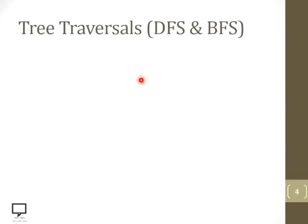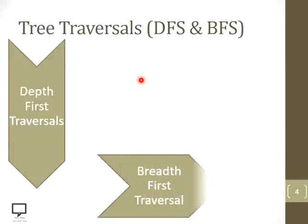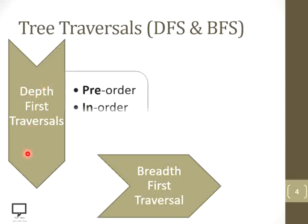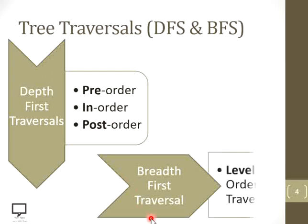Let's see what the different tree traversal techniques are for a binary tree. They are depth first traversal technique and the breadth first traversal technique. As the name suggests, depth first traversal goes into depth and has three different ways: pre-order, in-order, and post-order. Basically, these three types depend on the position of a root node. The breadth first traversal technique is the level order traversal.